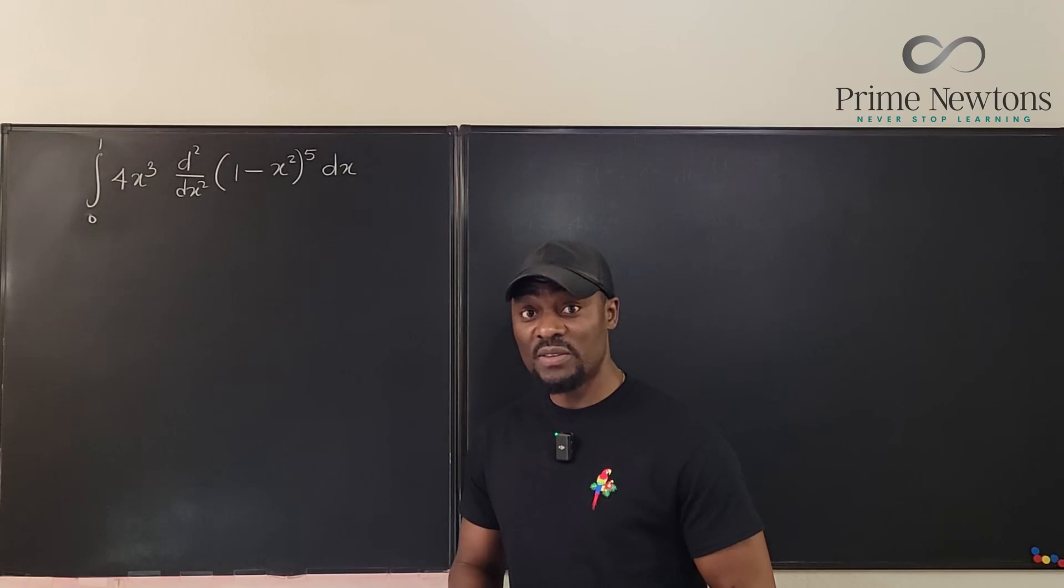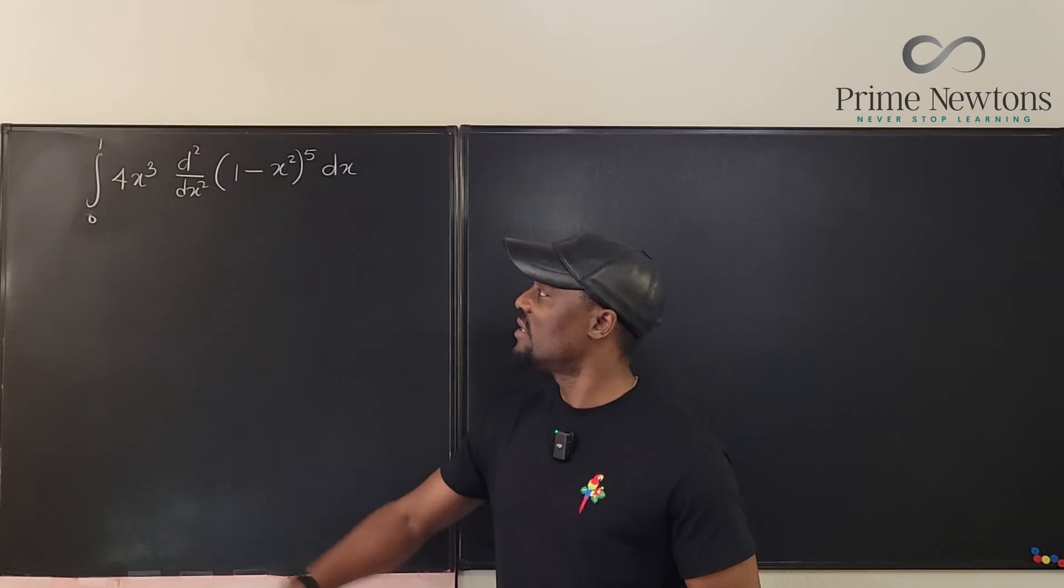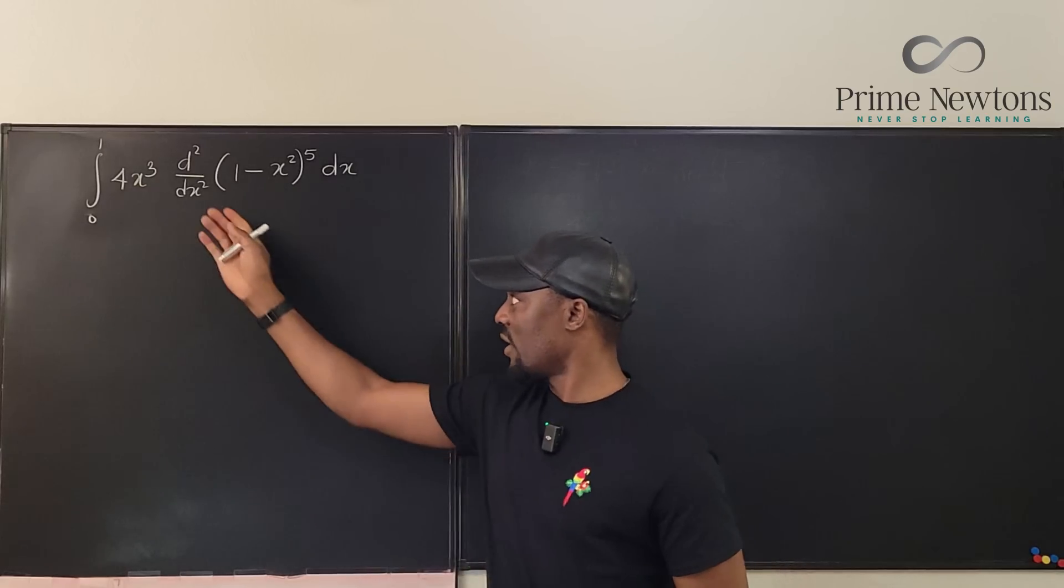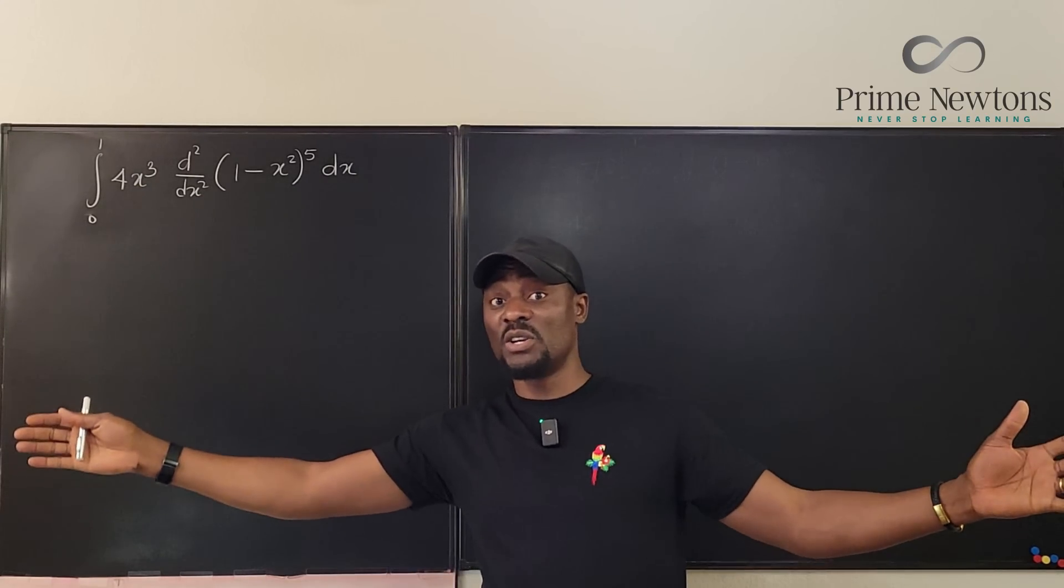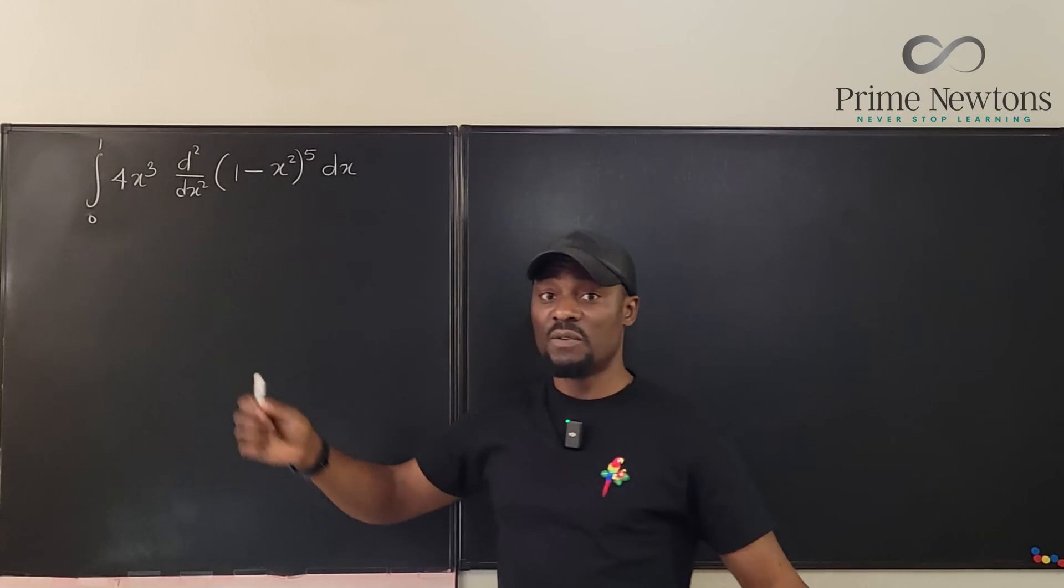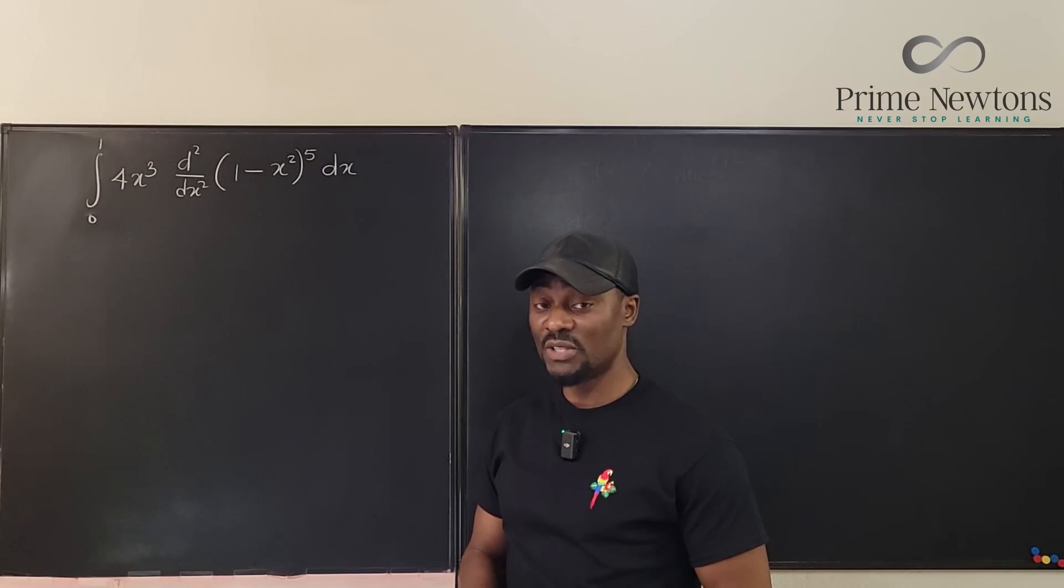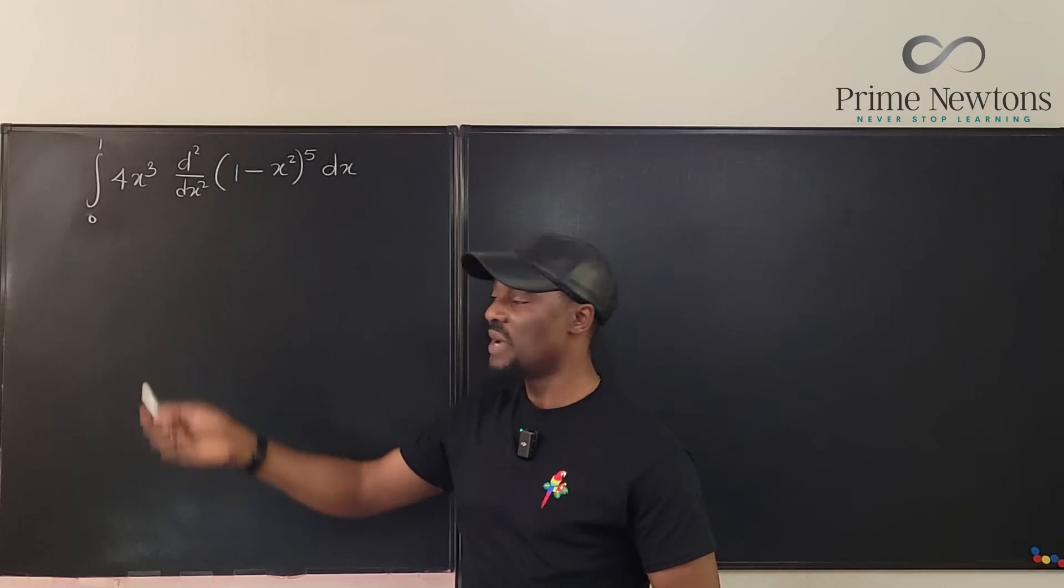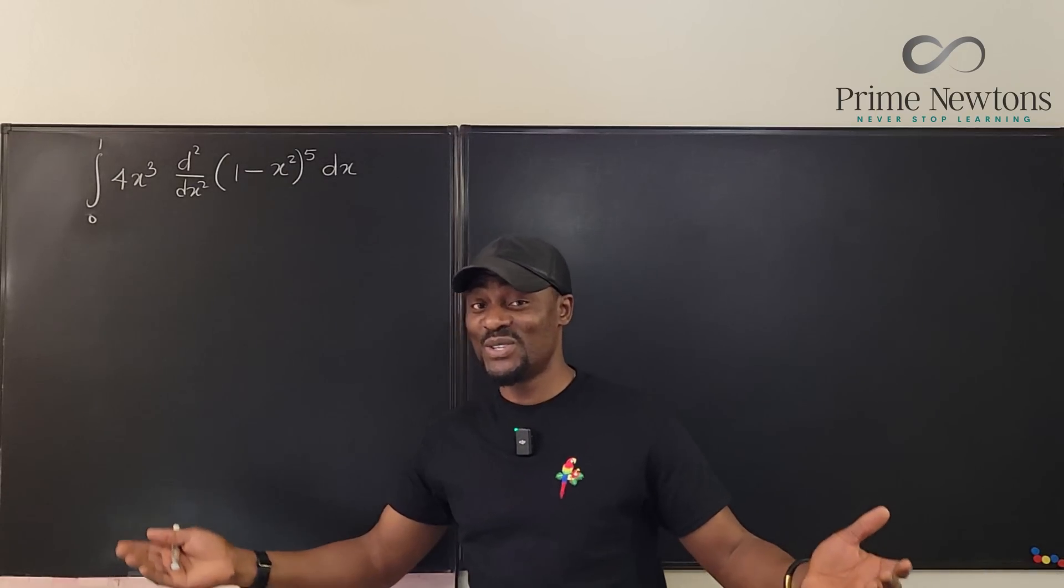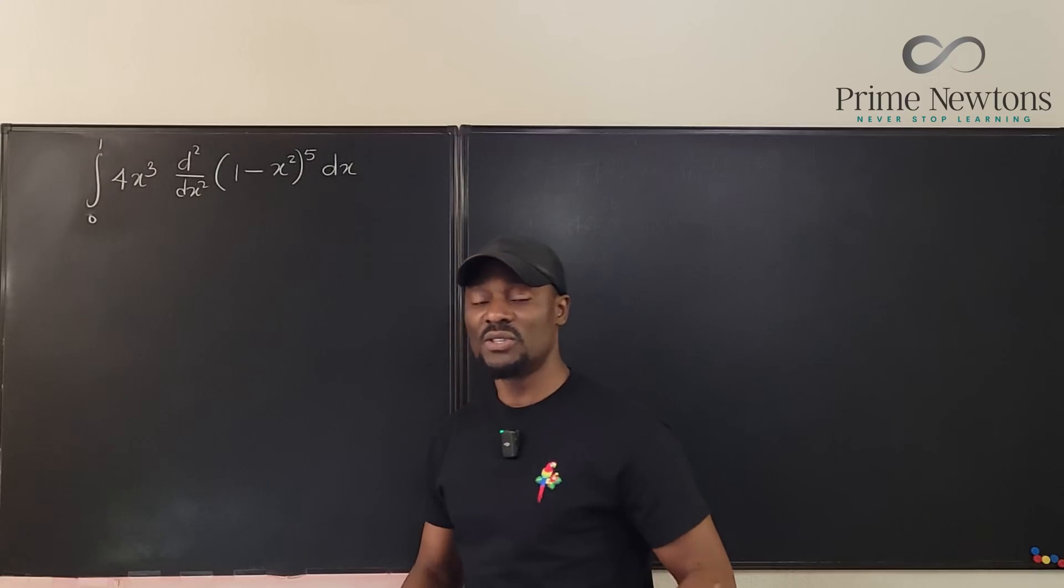The first time I saw this problem I said to myself I'm going to do it using brute force. So I took two derivatives of 1 minus x squared to the fifth. It was a chain of polynomials in different factors. I expanded everything and multiplied by 4x cubed and I got a long polynomial which I was able to integrate and I evaluated from 0 to 1. The 0 to 1 evaluation is pretty nice because everywhere you see 0 everything disappears and if there's a 1 you just take all the coefficients and put them together.